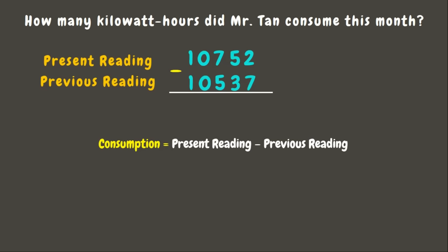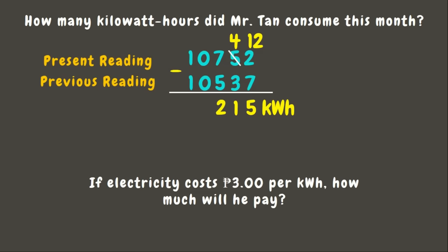2 minus 7 cannot be done, so we borrow 1 from 5, making it 4 and 2 becomes 12. 12 minus 7 is 5; 4 minus 3 is 1; 7 minus 5 is 2; 0 minus 0 is 0. Therefore, Mr. Tan consumed 215 kilowatt hours of electricity this month. If electricity costs 3 pesos per kilowatt hour, we multiply 215 by 3 — the electricity bill for the month would be 645 pesos.